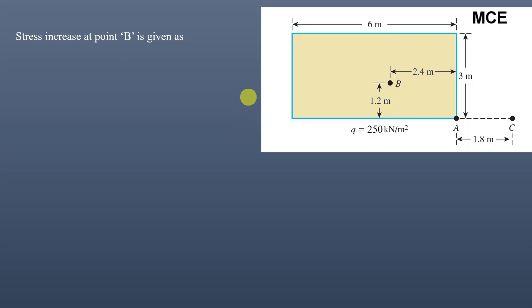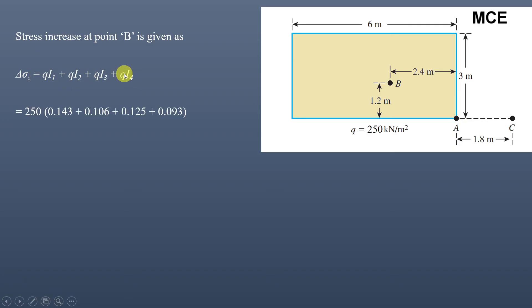The stress increase at point B is the sum of contributions from all four rectangles: q(I₁ + I₂ + I₃ + I₄) = 250 × (0.143 + 0.106 + 0.125 + 0.093) = 116.67 kilopascal.